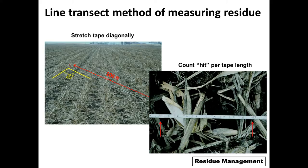How do we measure residues on the soil? We can use a method called the transect method. You lay a tape measure diagonally across your rows in the field — in this example we laid it out about 100 feet. You can also use a 10-foot section done in several places in your field. You count the amount of residue that hits each one-foot interval. For example, at the three-foot mark there's no residue, so that's a zero; at four feet there are some stalks and leaves, so that counts as a one. You add up all the hits on the 100-foot transect, and that number is your percentage. If using a 10-foot section, multiply the count by 10 to get the percentage.